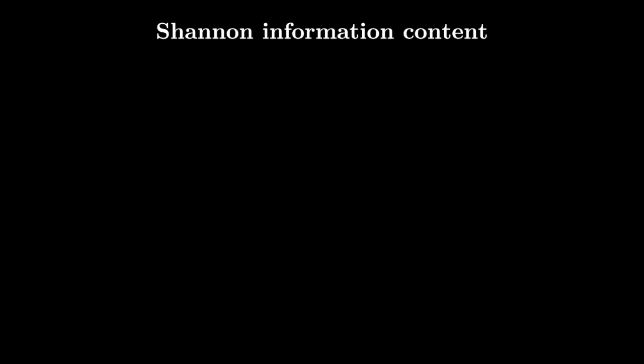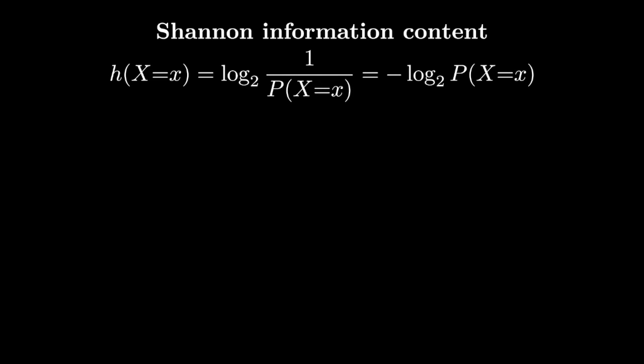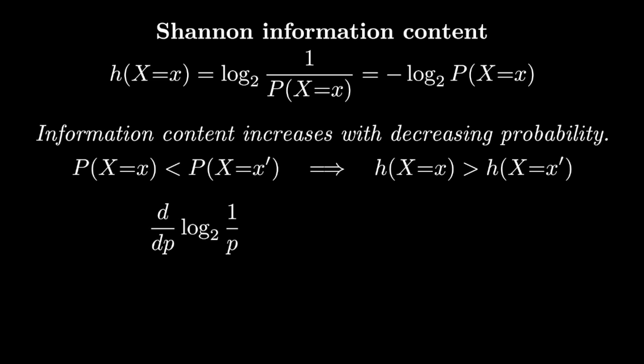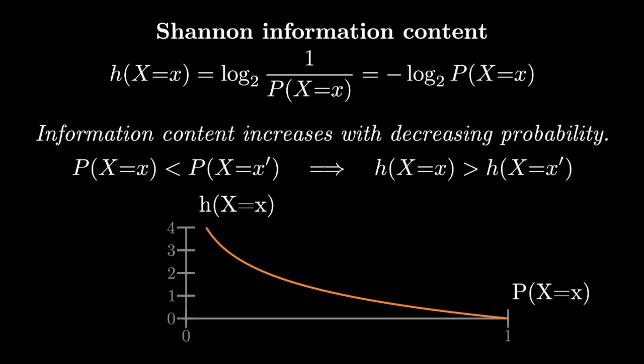Now let's look at the idea of decreasing probability implying increasing information content. So that means if I have an outcome x and an outcome x prime, and the probability of x is less than the probability of x prime, then the information content of x should be greater than the information content associated with x prime. One thing we can do is just look at the derivative of information content as a function of probability. We see that that derivative is less than zero, so that means that the information content must be decreasing with p. For good measure, we can also plot the function where the x-axis is probability and the y-axis is information content. And we can see visually that it's a decreasing function.